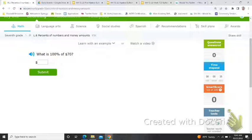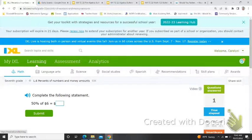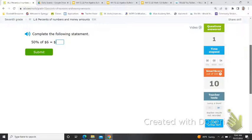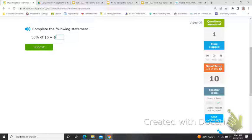This says, what is 100% of 70? So 100% would mean the whole thing. I don't really need to set up a proportion to do that. If it's 100%, it is the whole thing. So that would be $70. 50% of $6.